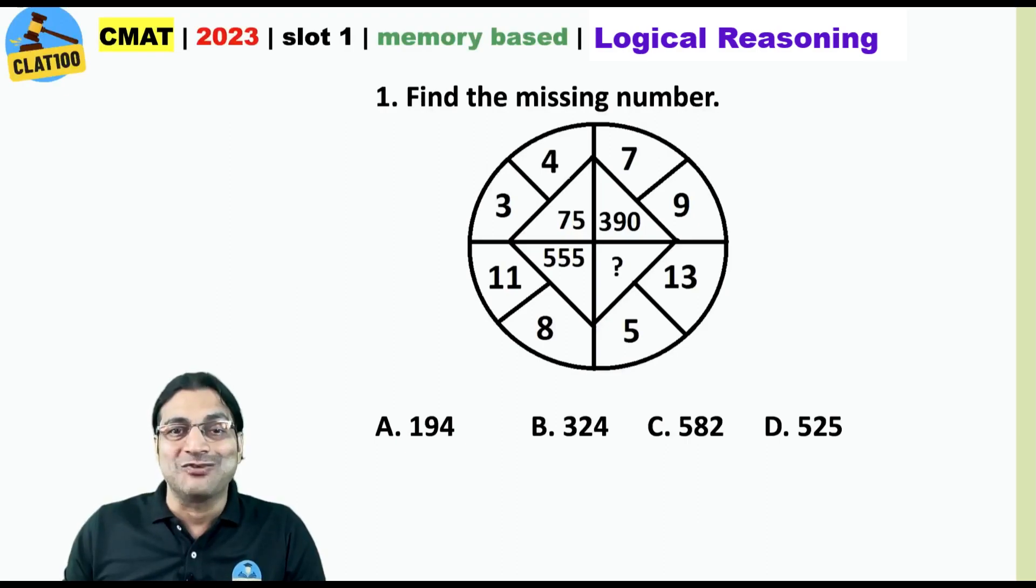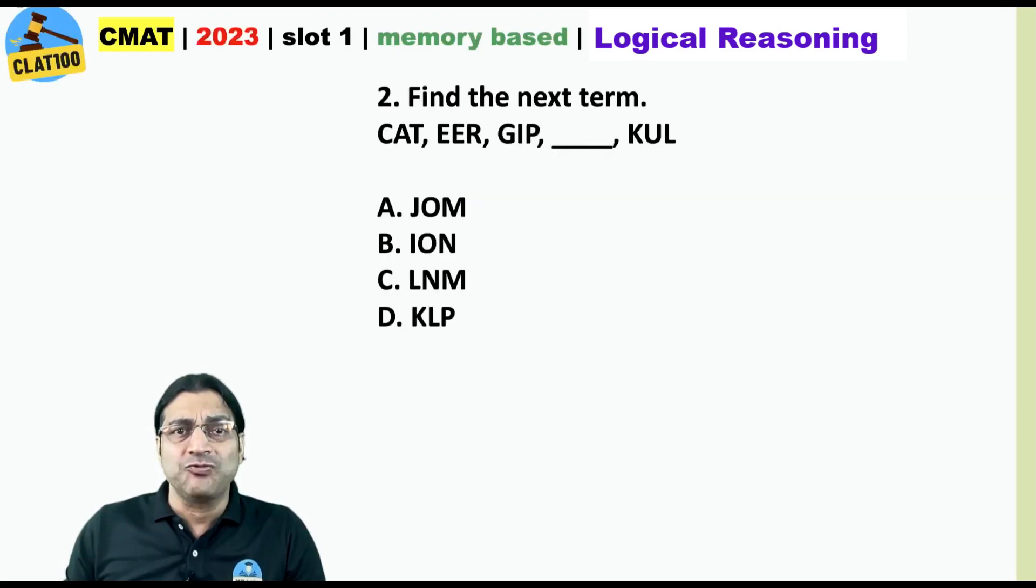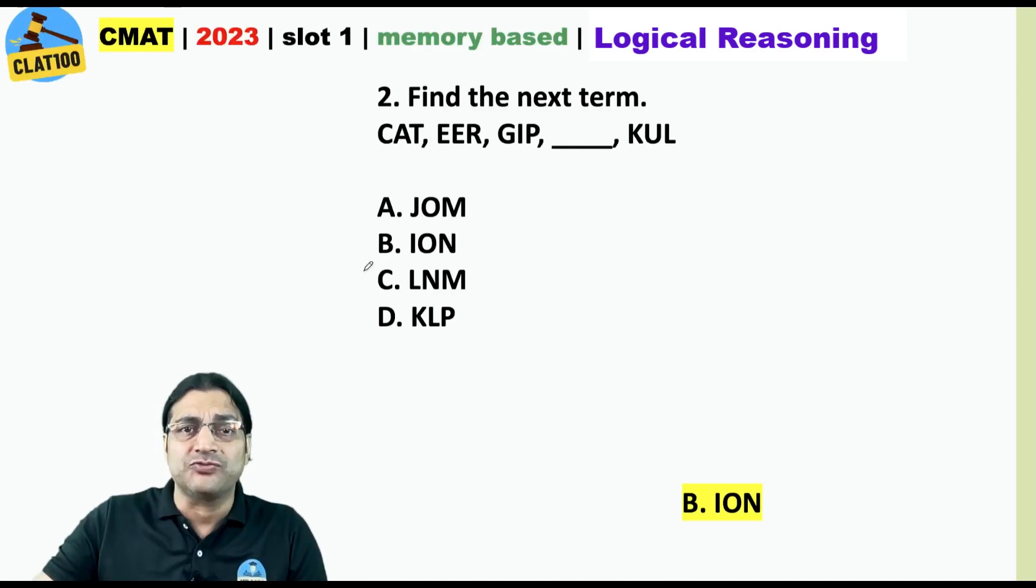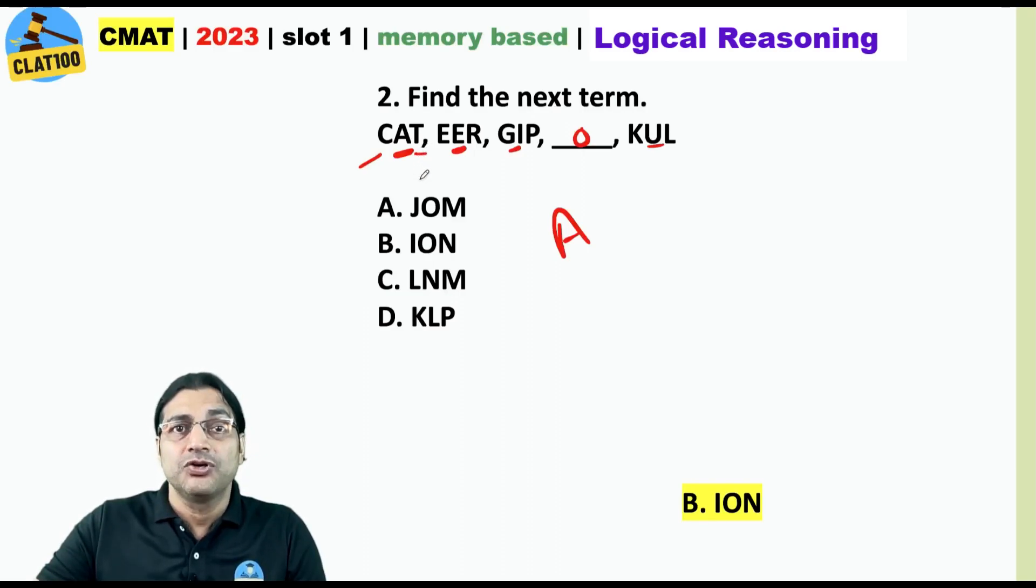What about this one? What is the answer? 582. What about this one? The answer is ION and there is absolutely nothing wrong with the question because when it comes to the middle terms A, E, I, O, U, they are all vowels. They do not follow the patterns that the first and the last letters of each and every term do.